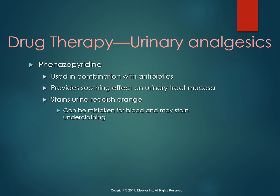There is one drug that acts as a coating on the urethra — phenazopyridine. It's a dye that's excreted in the urine and has an analgesic, or pain-relieving, effect on the mucosa of the urinary tract. We really want to make sure patients know that if they're prescribed this drug, their urine is going to be stained a bright orange to red color. It can stain the toilet if left to sit, and if they have any dribbling it can stain their underwear as well.